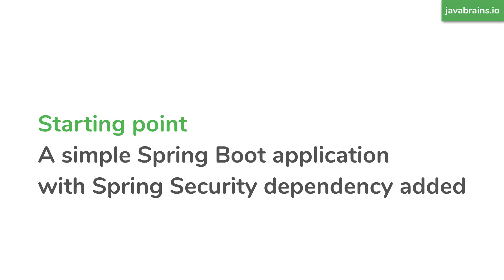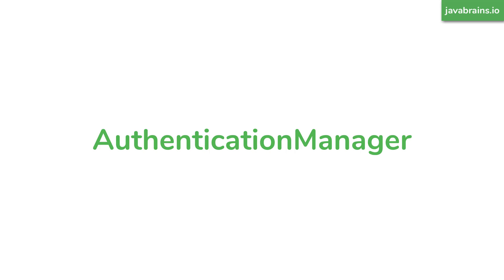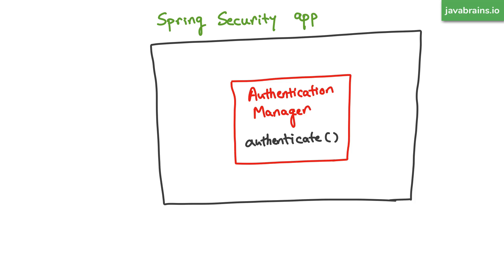The way to configure authentication in Spring Security is by affecting what's called the authentication manager. The authentication manager, true to its name, manages authentication in a Spring Security application. It actually has a method called authenticate, and that either returns a successful authentication or throws an exception when it cannot authenticate. So the authentication manager is what does the authentication.